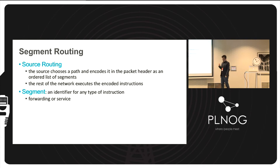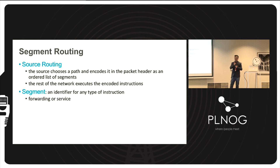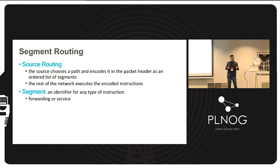Segment routing is a source routing technology. There is no state in the network — the state is only in the packet. The source can dictate the path by inserting a series of segment IDs — SIDs — at the packet header. These are analogous to labels in MPLS LDP networks but are called segment IDs in SR. The rest of the network understands these segment IDs and knows how to behave upon receiving them. A segment can be forwarding-based or service-based.